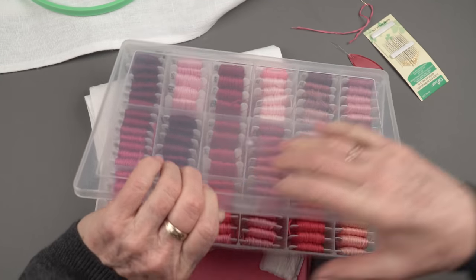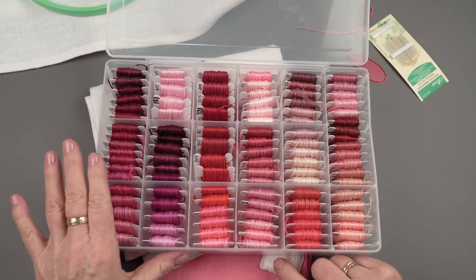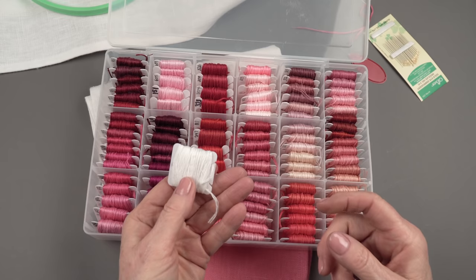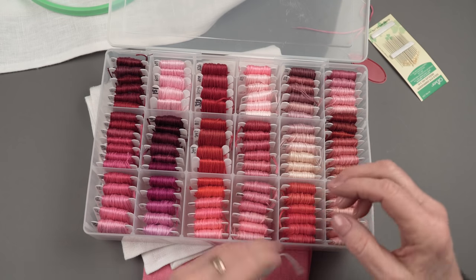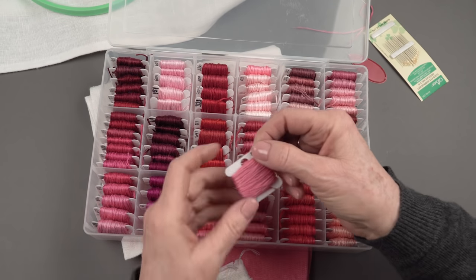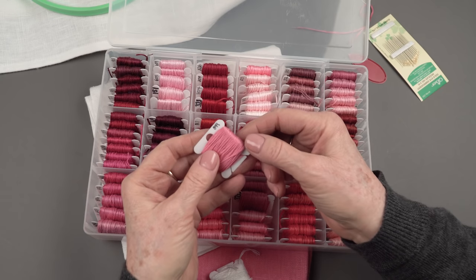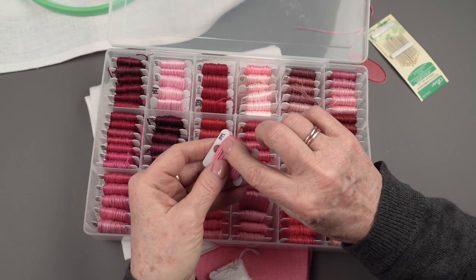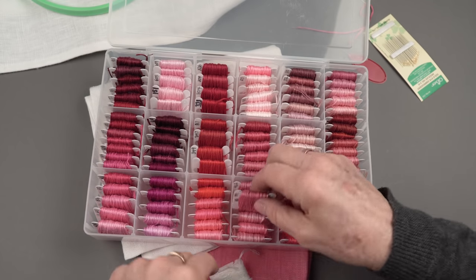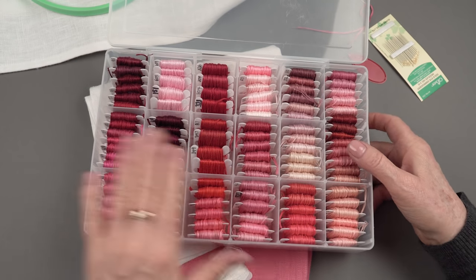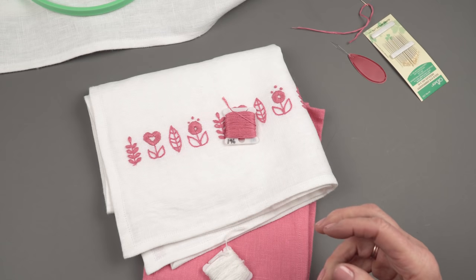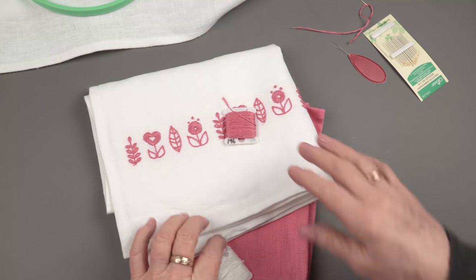We chose to organize our floss by color so each box has a different color in it. We put them on the bobbins so they're neat and tidy and then we numbered them so that when we get down to the bottom of a bobbin of floss, we can easily know what number we're going to go look for to refill. I did that this week. It was really handy to have that all organized and ready to go. So that's how we do the floss.